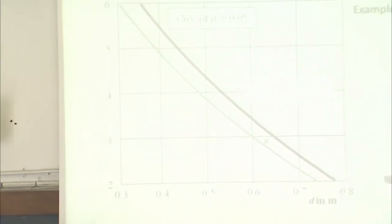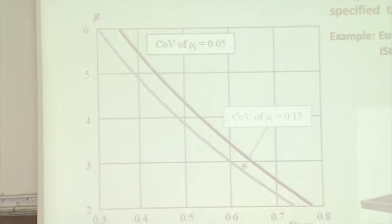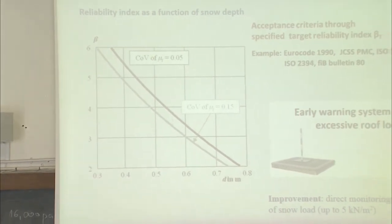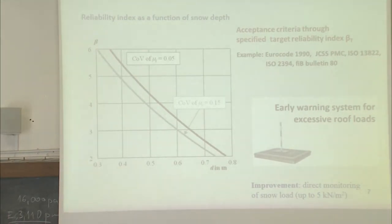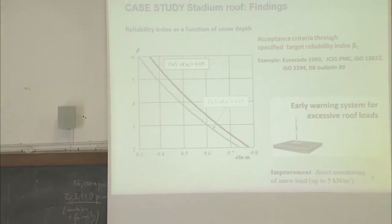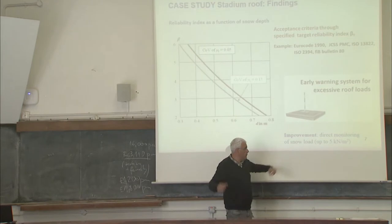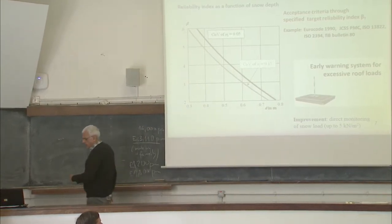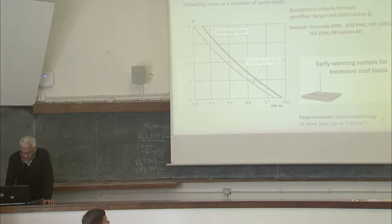As the snow depth increases, the reliability will decrease. You might also have the influence of the variability of important parameters like the shape factor μ, and we also found in the last two months that there are direct measurements of the snow load — so you don't need to measure the snow depth. We have early warning systems and sensors for this; they are about half a meter by half a meter, but also larger at one to two meters by two meters. They cost around seven thousand euros, and owners typically put one or two of these warning systems for excessive roof loads on roofs.